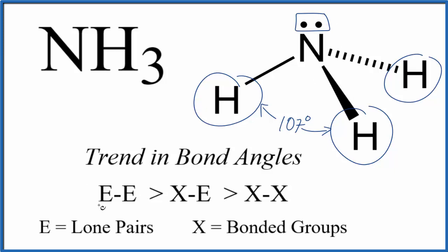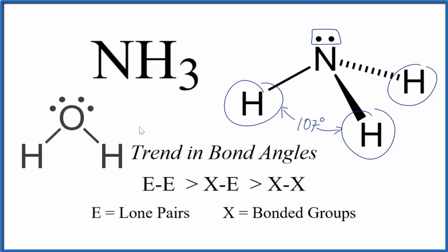So what if we had two lone pairs? What would that look like? Water is a great example of this. We have H2O, and here we have our two lone pairs. We said two lone pairs would push down even more than a lone pair and an atom like this. It turns out the bond angle for water is 104.5 degrees.